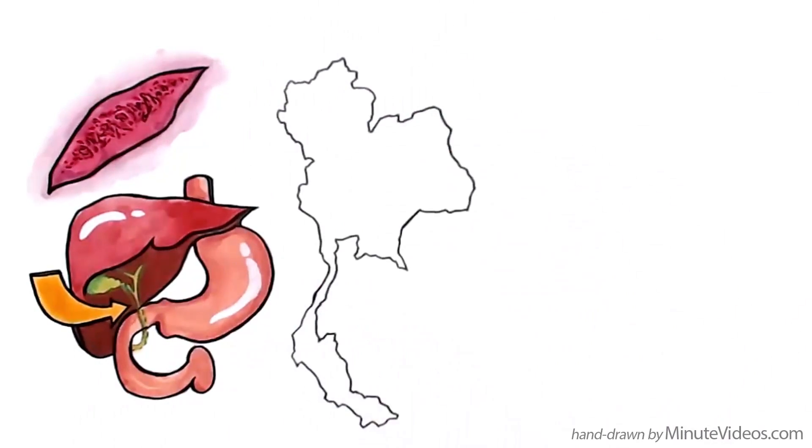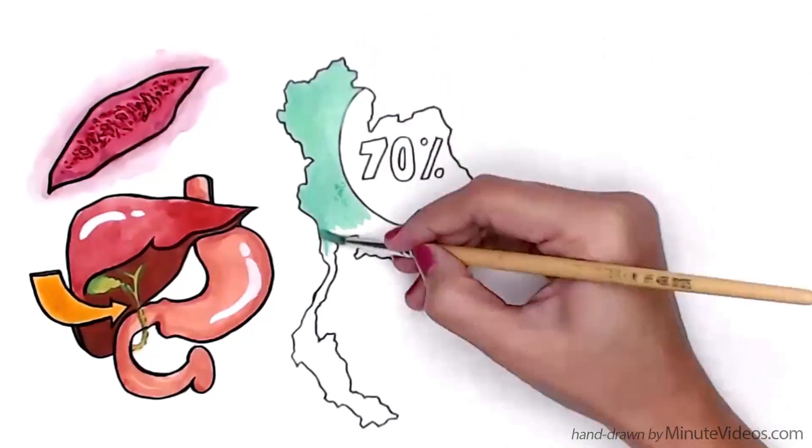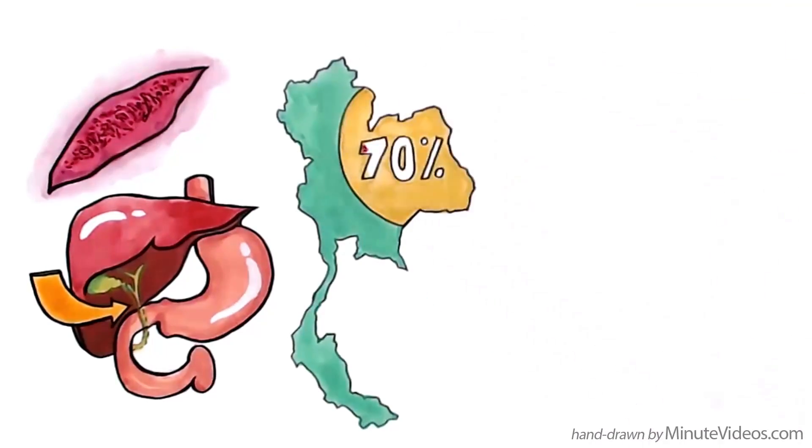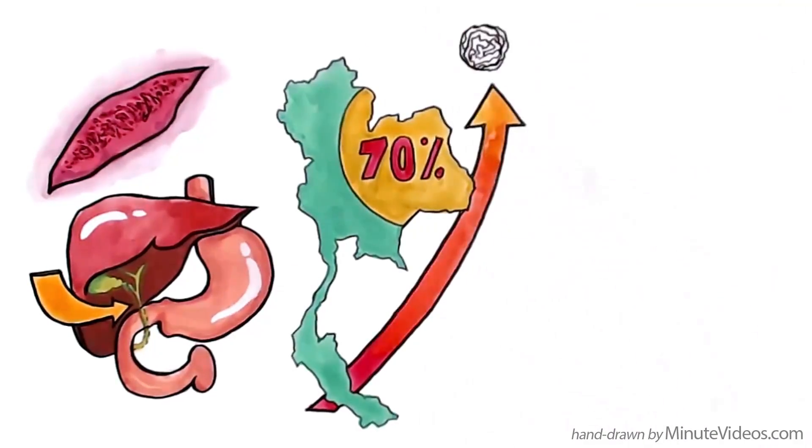In the northeastern provinces of Thailand, at least 70% of the population is infected with the parasite, which causes a very high number of bile duct cancers.